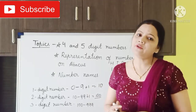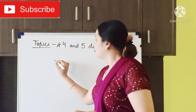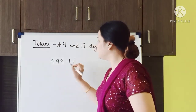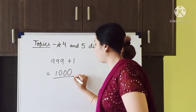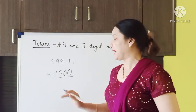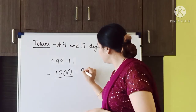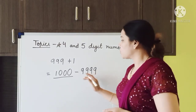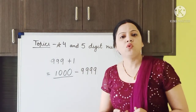Now I will teach you 4 and 5 digit numbers. As I already told you, 999 is the largest 3 digit number. As soon as we add 1 to it, it becomes 1000, which is a 4 digit number. So 1000 is the smallest 4 digit number, and the largest 4 digit number is 9999. Any number which falls between 1000 and 9999 is a 4 digit number.